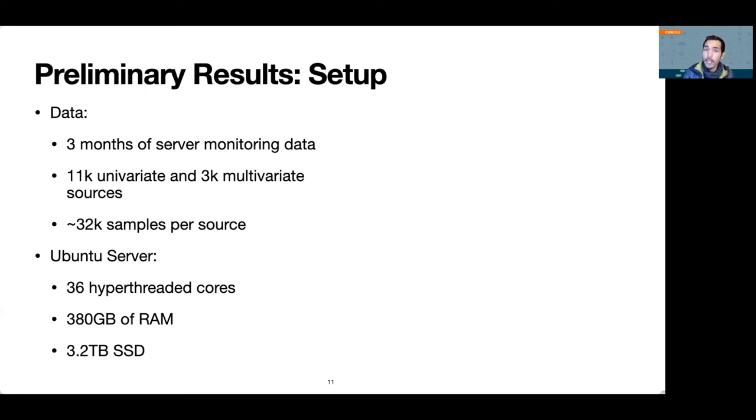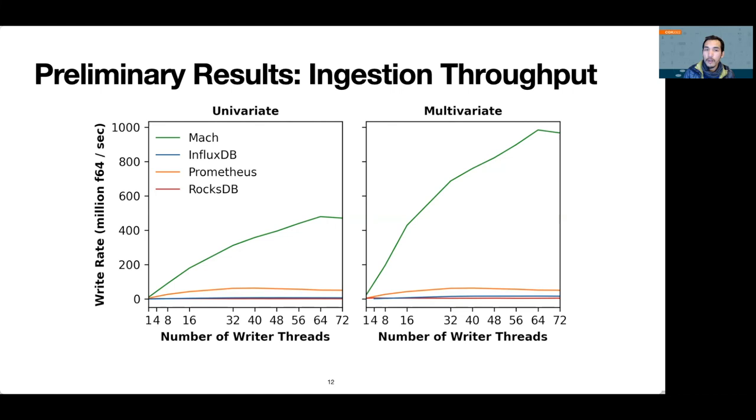To simulate many more sources, we randomly reused the sources of data. We run these experiments on an Ubuntu server with 36 cores, 380 gigabytes of RAM, and 3.2 terabytes of SSD. In this presentation, we only show experiments on ingestion throughput.